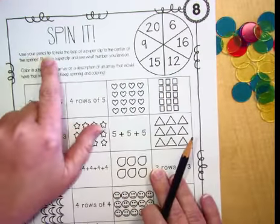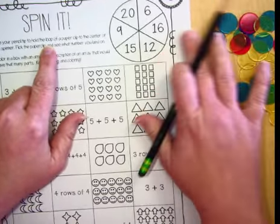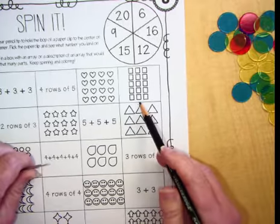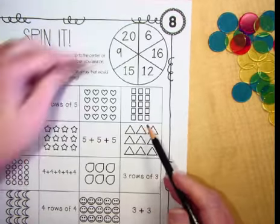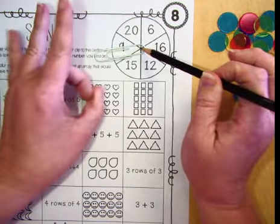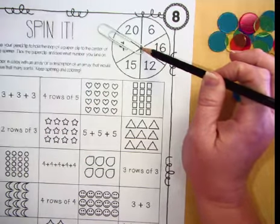It says use your pencil tip to hold the loop of a paper clip to the center of the spinner. Flick the paper clip and see what number you land on. So I've got a paper clip here, my pencil. And what I'm going to do is I'm going to stick my pencil in there and then it becomes a spinner. I can thump it like this to figure something out.